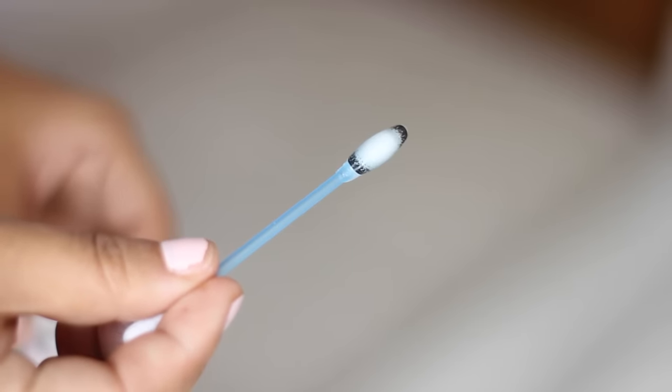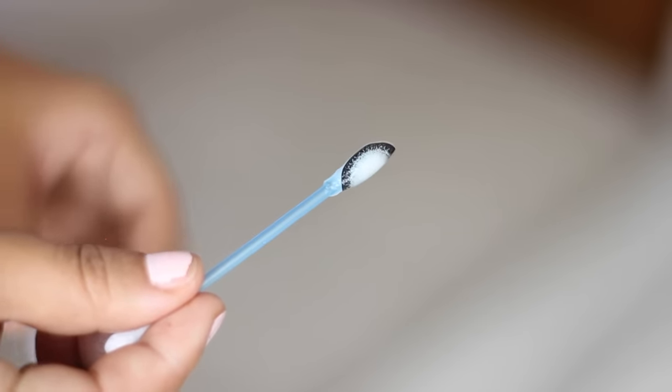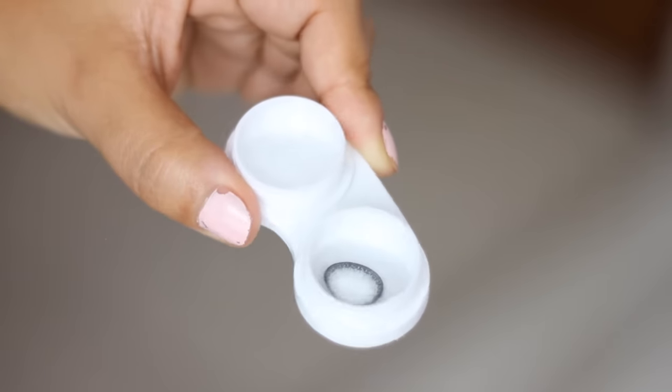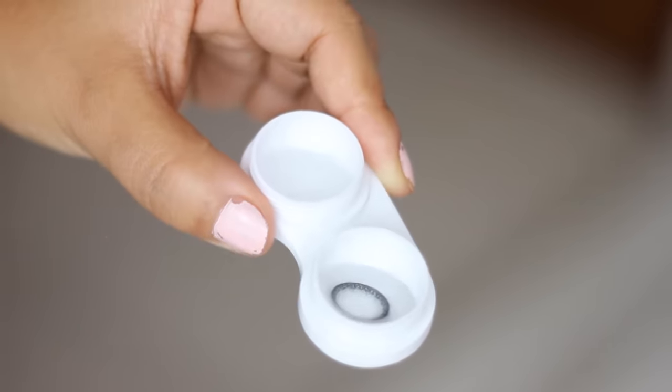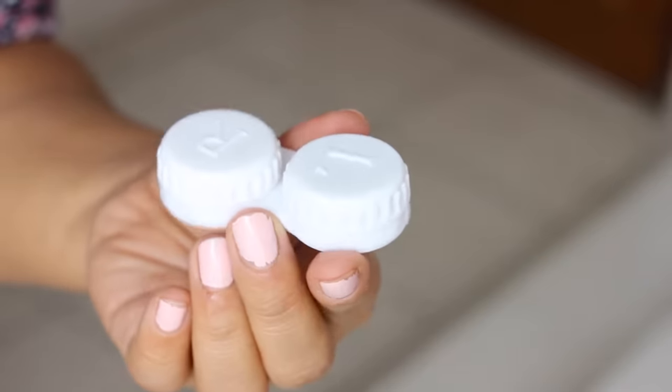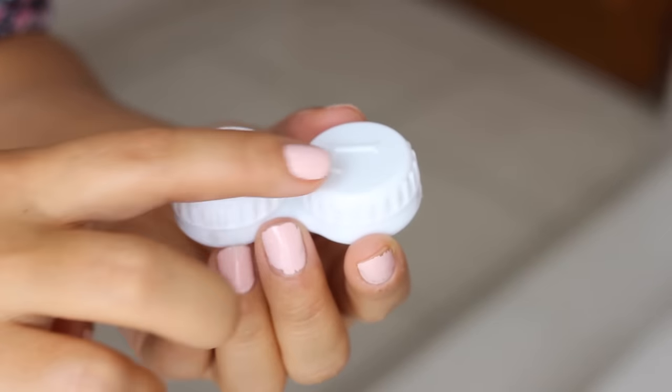Also the cotton bud is wet so you don't have to worry about any lint or hair sticking to your lenses. Just make sure that the lens is completely immersed into the solution and then add the lens case cover. Always make sure to get a lens case that has clear indications of the right and the left eye.